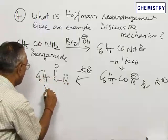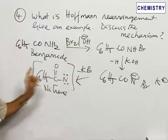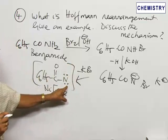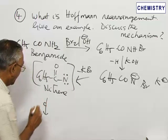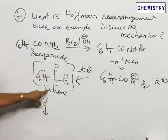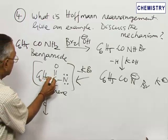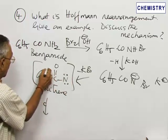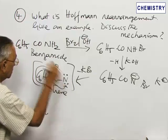This nitrene intermediate undergoes rearrangement — rearrangement is normally indicated by means of an arrow with a small circle. Because nitrene is an electron-deficient group, the phenyl group migrates from carbon to nitrogen. The whole group migrates — it is attached to carbon and it migrates to nitrogen.